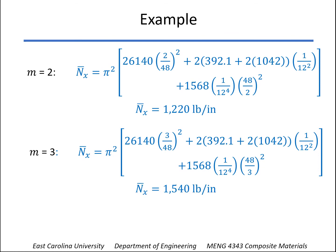And now we can see that n_x is going back up. So M equals 2 corresponds to the critical buckling load. And so, 1,220 pounds per inch would be our solution there.